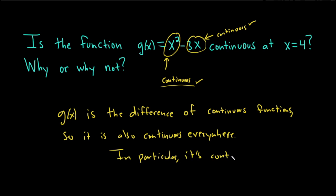And you can explain it a different way as well. You could simply say, g of x is a polynomial. Polynomials are continuous everywhere. So in particular, it's continuous at x equals 4.